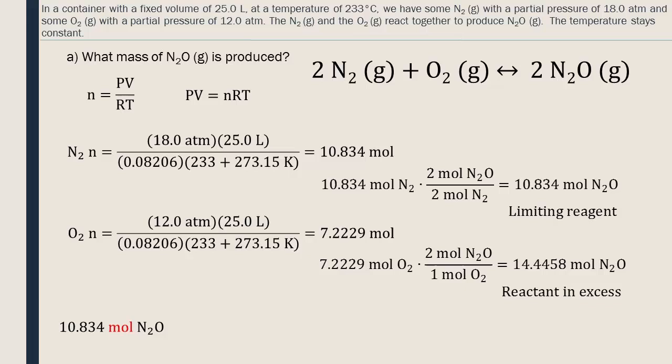Now that we know how many moles of N2O can be produced, we just need to multiply these numbers by the molar mass to see what this represents in grams. The molar mass will be calculated directly in the equation. The answer is rounded to 3 significant digits, because all the data given in the question also had 3 significant digits.